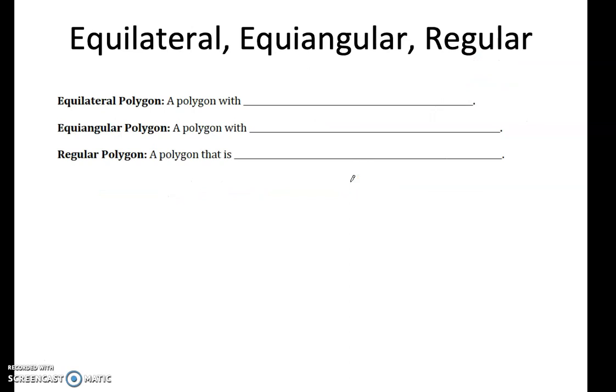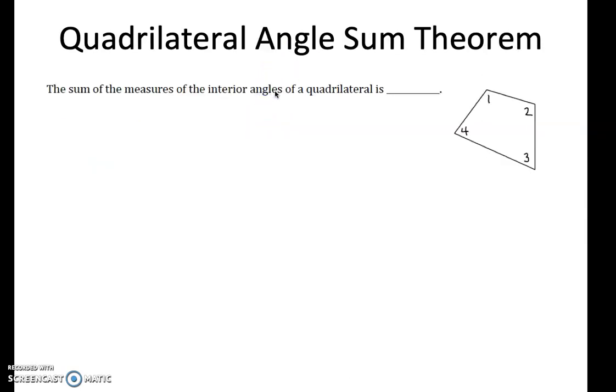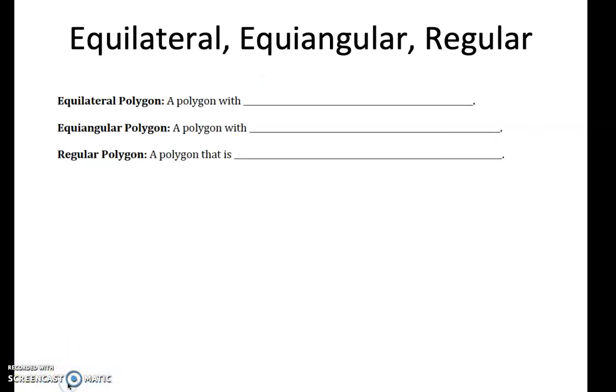One thing I'd really like you to be comfortable with are these three terms, especially regular polygon. An equilateral polygon is a polygon with congruent sides. I want you to be really good at reading our diagrams because they tell you what is congruent and what is not necessarily congruent. Let's say I have an equilateral polygon here. I would mark all of these sides congruent. Please include this picture in your notes.